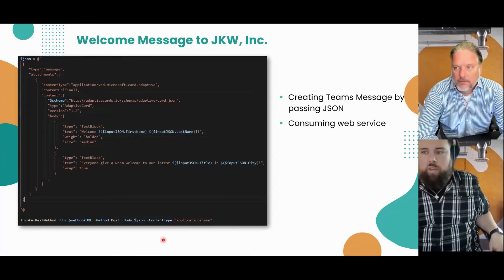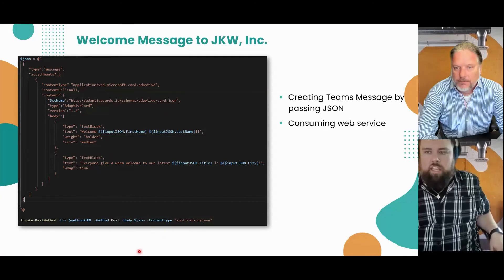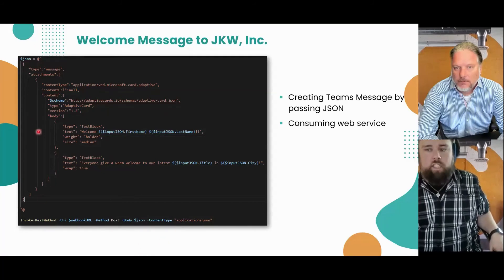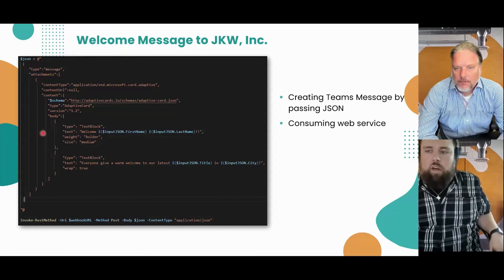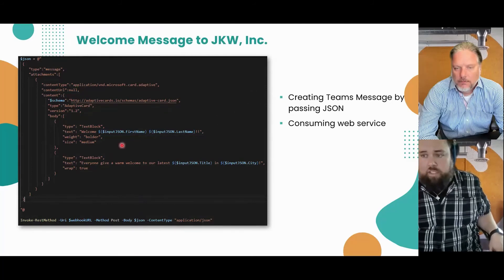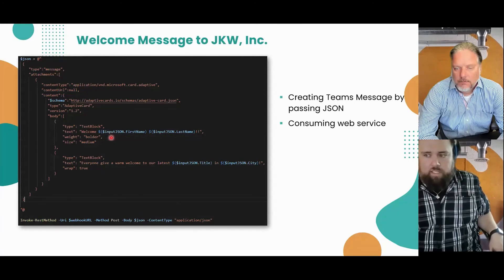They have builders online where you can actually build this up — this is JSON, proper JSON — and you can build their JSON schema online using one of their builders to get this adaptive card. We've got this input JSON coming from the service request, and we're passing the properties of that into this JSON card.